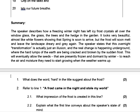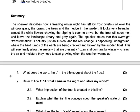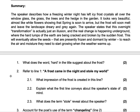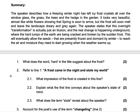In this poem, A Hard Frost, the speaker describes how a freezing winter night has left icy frost crystals all over the window, the grass, the trees, and the hedge in the garden. Remember, he was looking out of the window and these are all the things that he saw that were covered in icy frost crystals and snow. It looks very beautiful, almost like white flowers, showing that spring is soon to arrive, but the frost will soon melt and leave the landscape dreary and grey again.